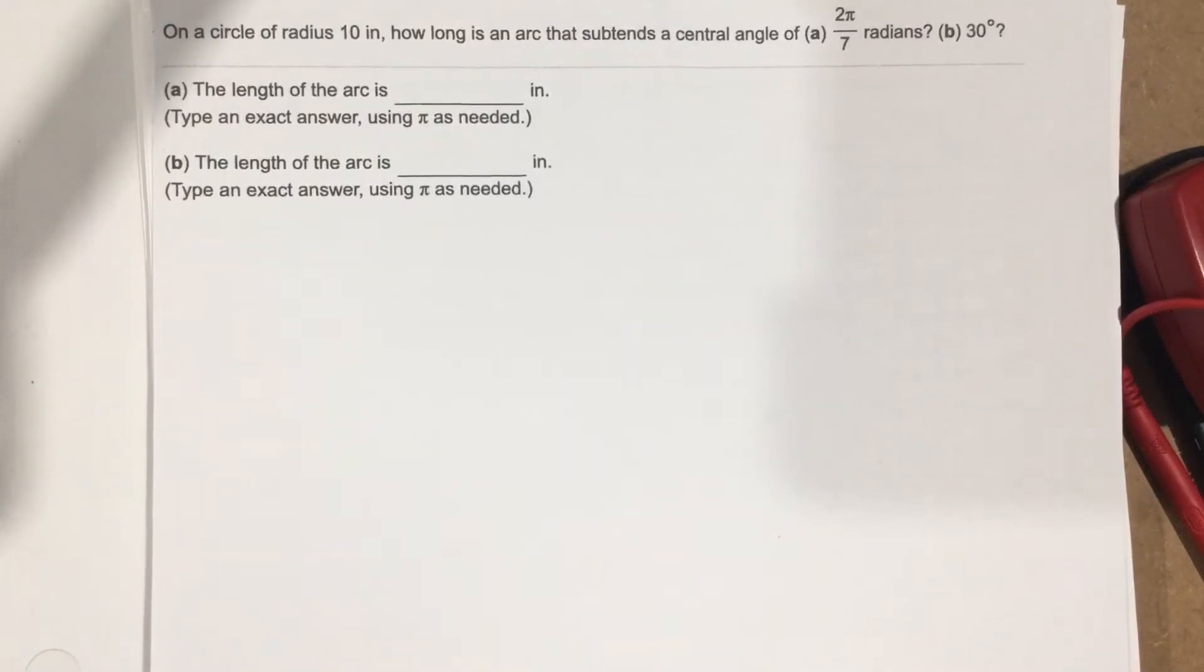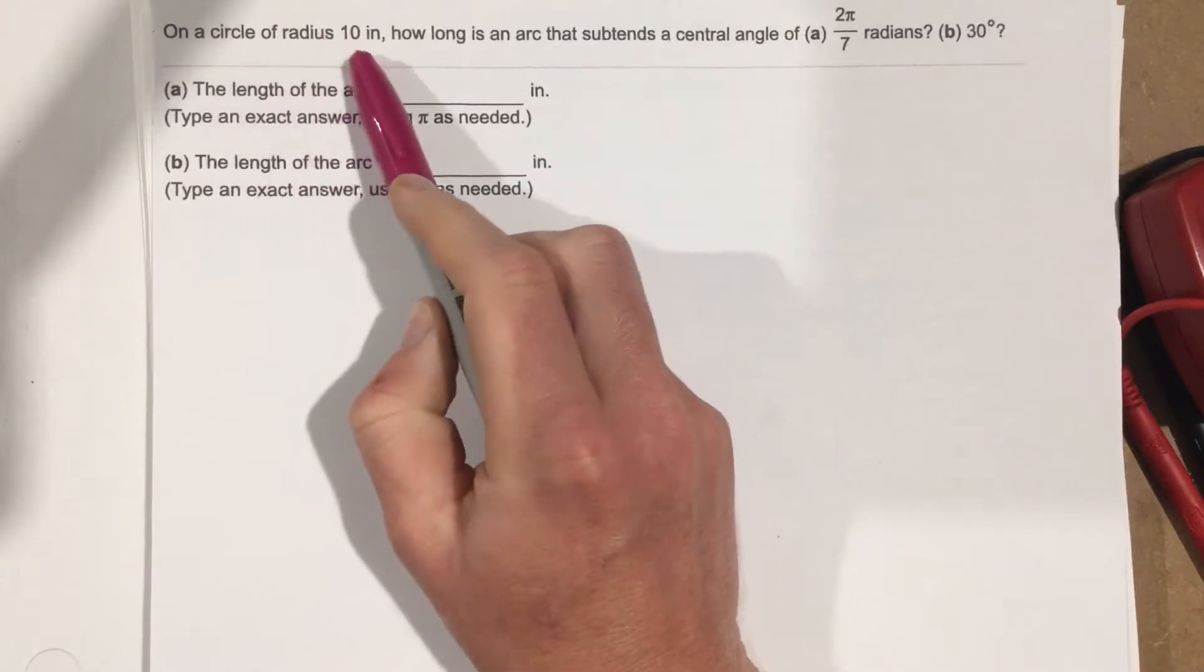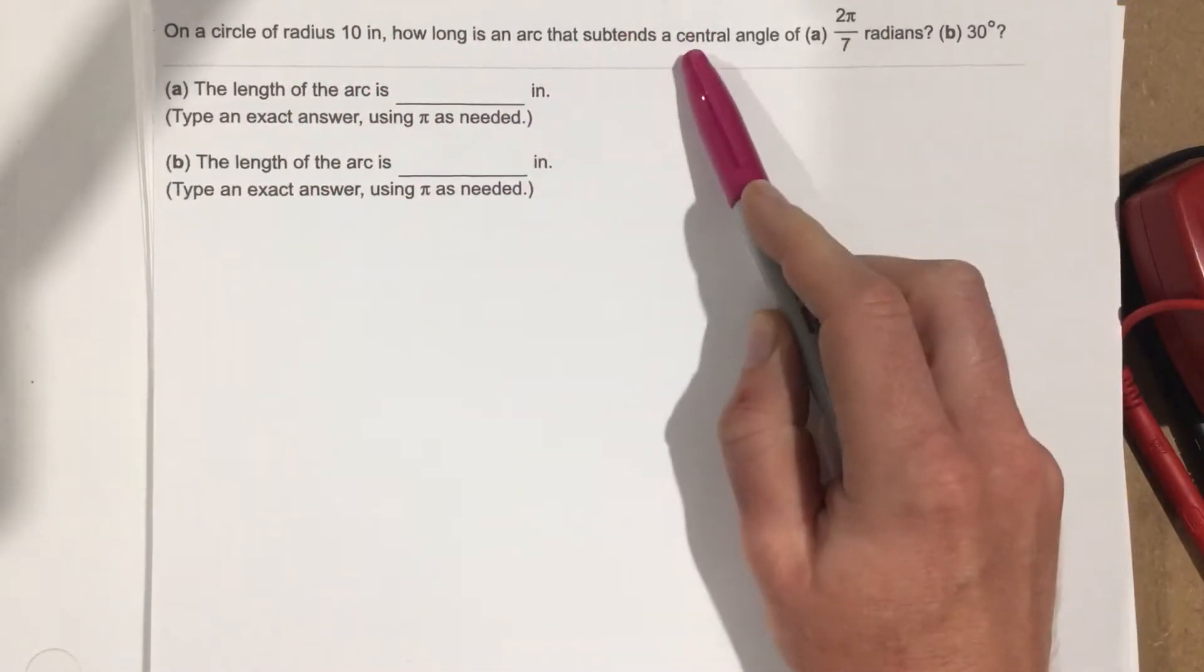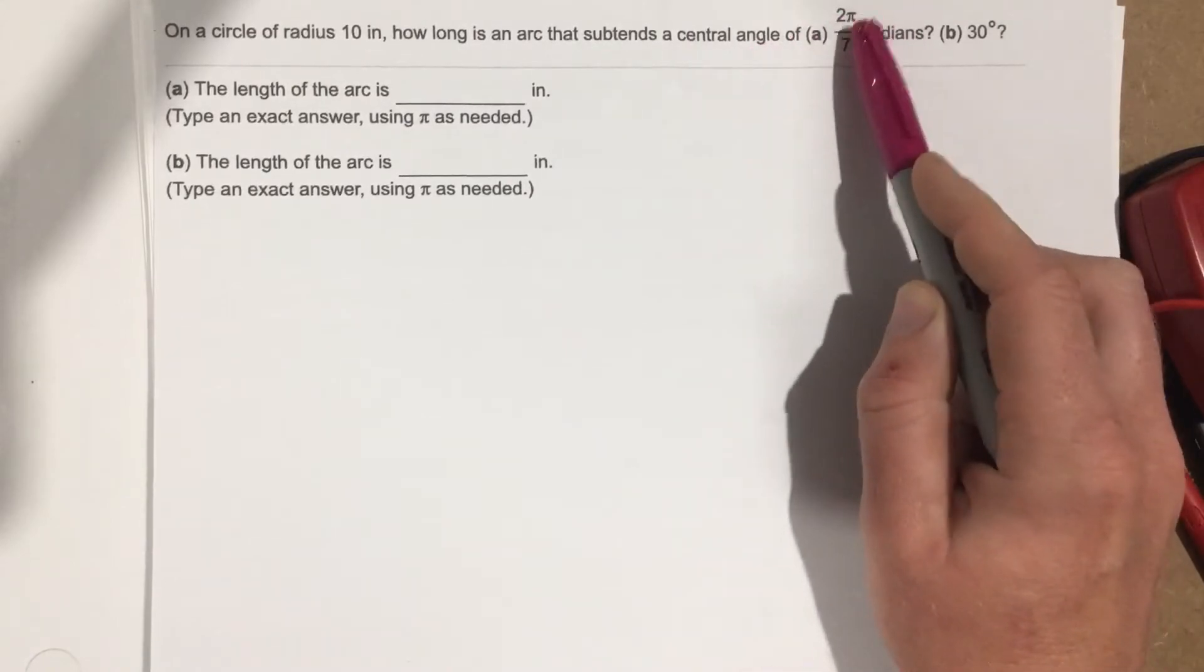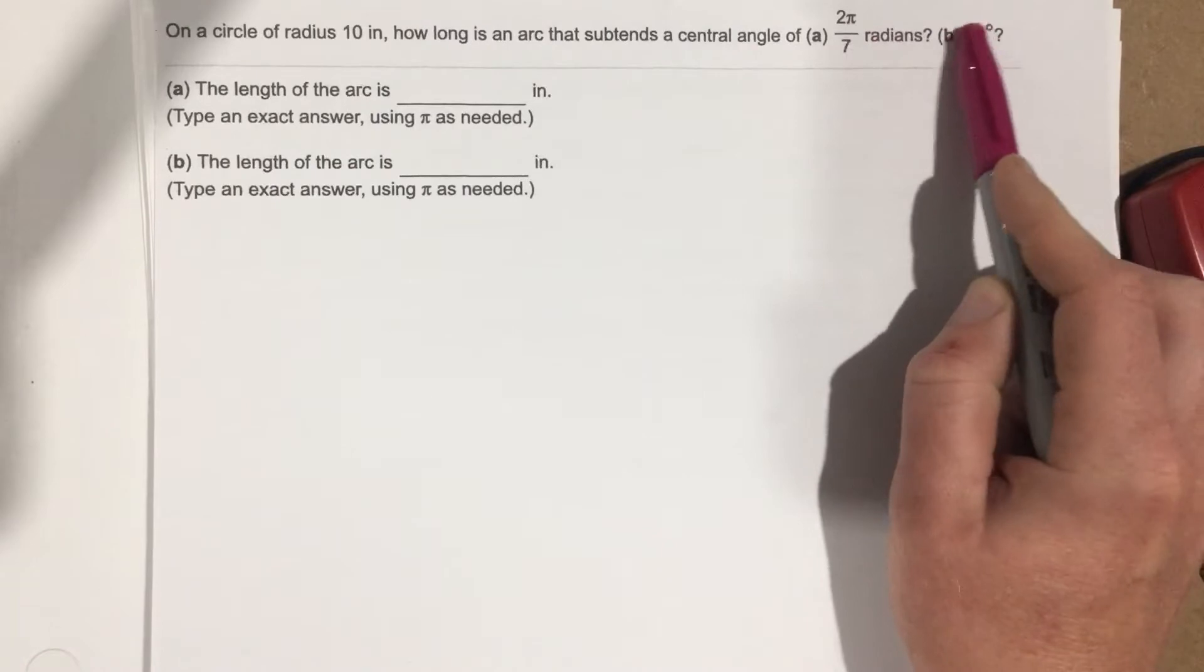This is problem number 1 from section 1.3. In this problem it says, on a circle of radius 10 inches, how long is an arc that subtends a central angle of 2π over 7 radians? That's part A. And then part B, 30 degrees.